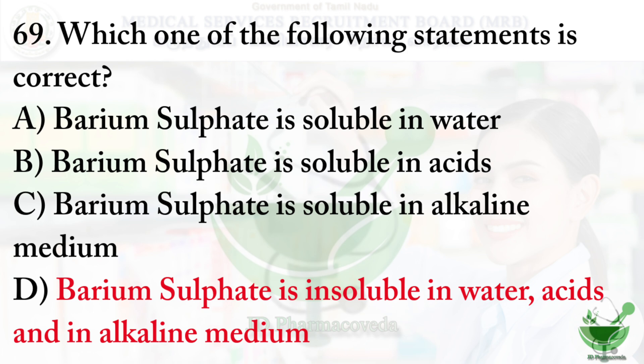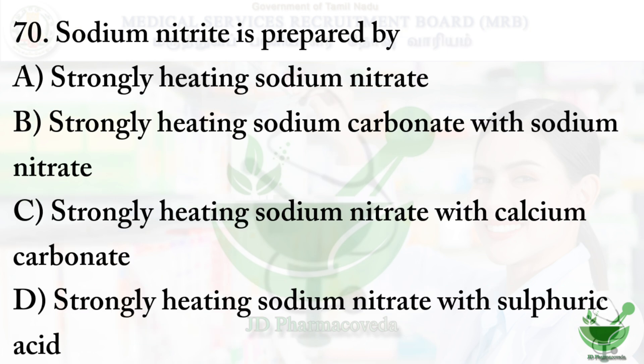Question number 70: sodium nitrite (NaNO₂) is prepared by — option A: strongly heating sodium nitrate (NaNO₃). Option B: strongly heating sodium carbonate with sodium nitrite. Option C: strongly heating sodium nitrite with calcium carbonate. Option D: strongly heating sodium nitrite with sulfuric acid. The right option is option A — strongly heating sodium nitrate itself can produce sodium nitrite.